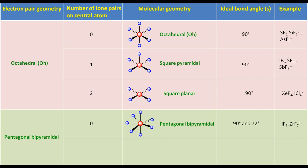For a molecule with pentagonal bipyramidal electron pair geometry having one lone pair on the central atom, we will put the lone pair on the equatorial position because the number of electron pairs is odd. Ignoring the lone pair will result in distorted octahedral molecular geometry. The ideal bond angles are 90 and 72 degrees. XeF6 is an example of this type of molecule. Thank you.